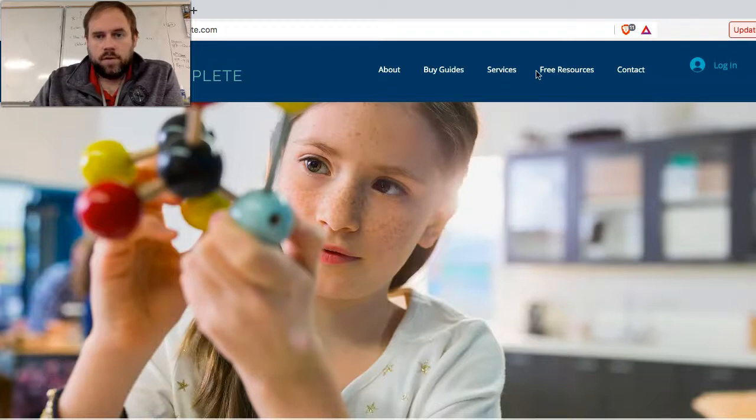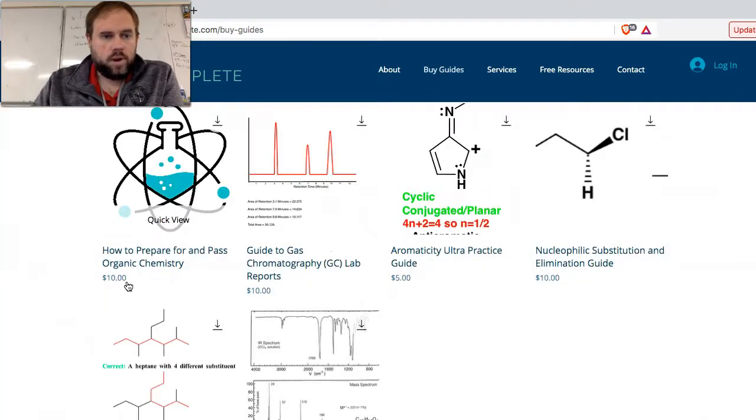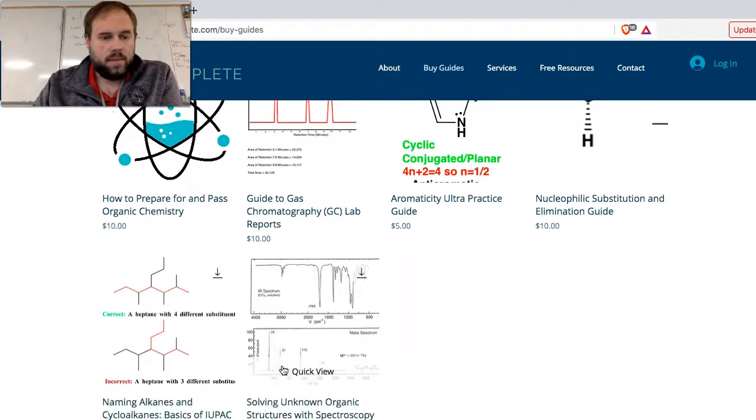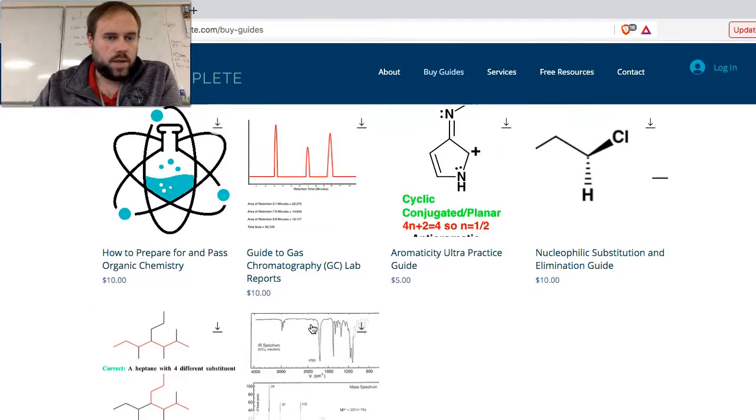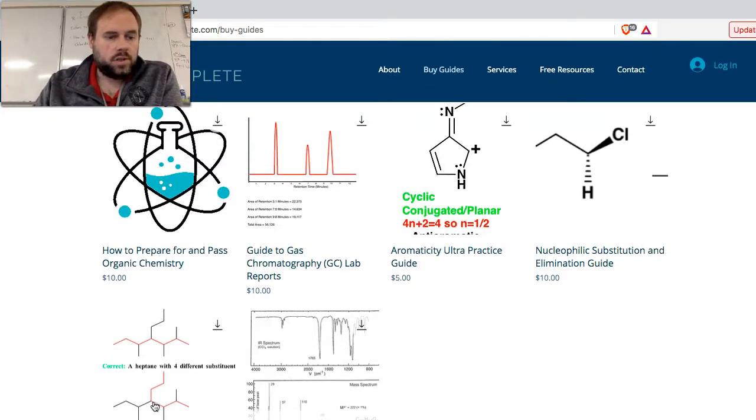If you come over here and you click on buy guides, this is a perfect way that you can support the channel. We have very affordable guides: how to pass and prepare for organic chemistry, gas chromatography, aromaticity practice, SN1, SN2 guides, and the most popular one, the solving unknown organic structures guide, because most people have issues with spectroscopy when they're first learning it. Head on over to chemcomplete to show us some additional support, if you would, and I will see you guys for the next lecture where we are going to start acetal and ketal reactions. I'll see you guys then. Thanks for joining me.